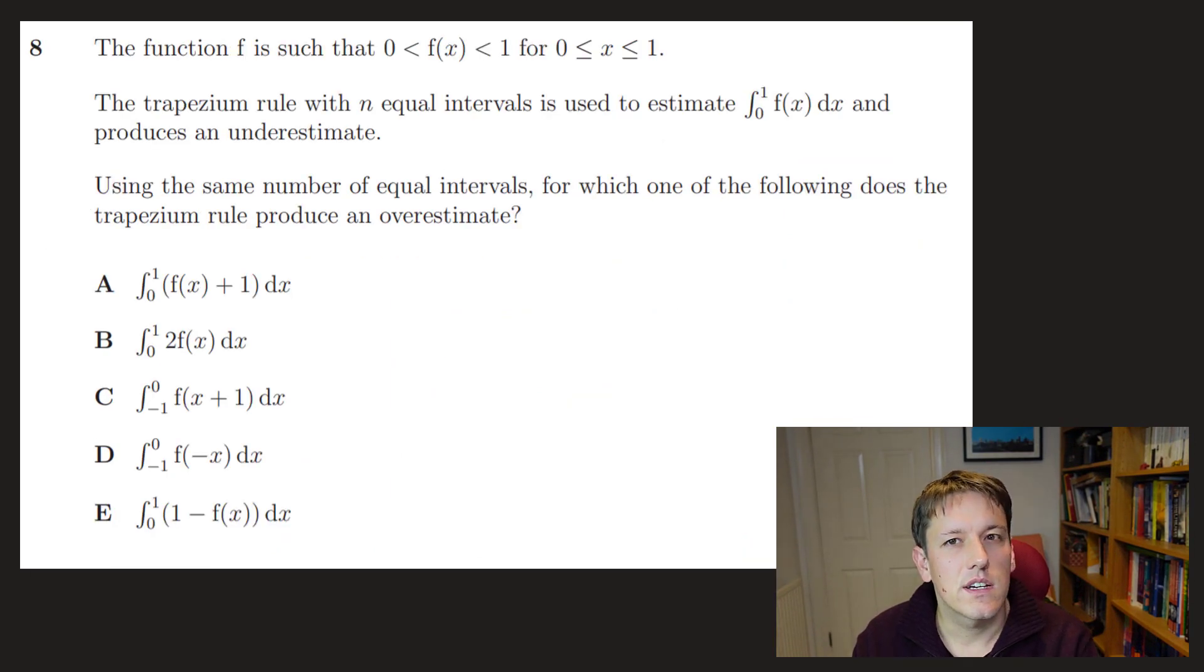Right. So here we've got a function that takes values between 0 and 1 for x values between 0 and 1. And when the trapezium rule is used, we get an underestimate. Now, you know, in this question, you don't have to think in too much generality here. If, you know, the answer here is going to be true in general. So you can just think about an example that fits the characteristics here. And if it's true in general, it has to work for your example.